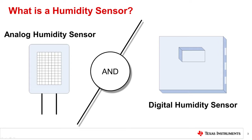Traditionally, measurements from analog humidity sensors were used to study and predict weather, and over time have found their way into several products we use daily. In the last decade, as systems have become more integrated, connected, and faster, a true need for digital humidity sensors emerged. They provide not only a wired interface to a larger system, but also greater accuracy, smaller size, low cost, and lower power consumption compared to previous analog implementations.